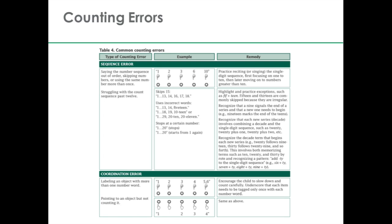One type of error is called the sequence error — the children might count 1, 2, 3, 6, 10. So that child doesn't yet know the counting words in order, skipping some counting words and needing to learn the full list. There are some words in English that are known to be problems — words like 15 are one of the most common counting words left out in children's counting, perhaps because 15 doesn't sound like 5 whereas 14 does sound like 4. It will be very common to see children leave out a count word like 15.